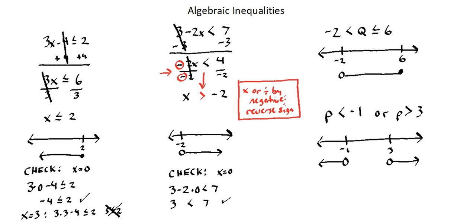So in conclusion, the key concept to keep in mind for inequalities is the reverse sign rule. Whenever you use multiplication or division in the isolation process and you're multiplying or dividing by a negative value, make sure to reverse the sign. This concludes algebraic inequalities. Thanks for watching, and I'll see you in the next lesson.